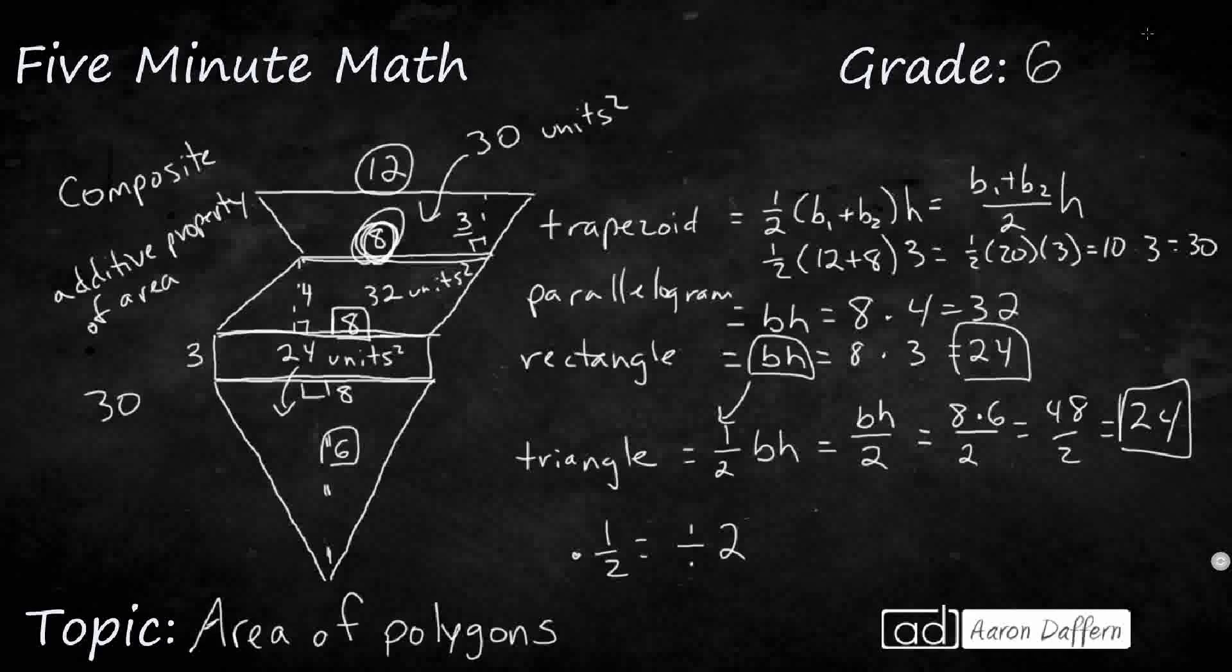So if I add them, I'm going to get 30, 32, two 24s make 48. That's going to be 110 square units.